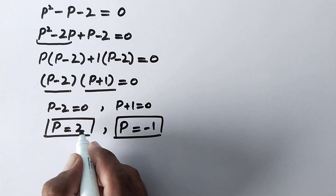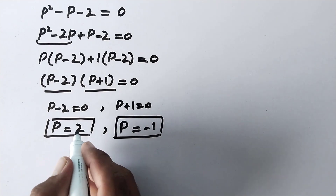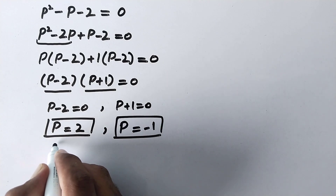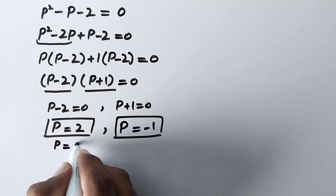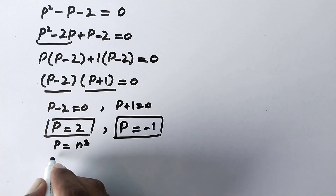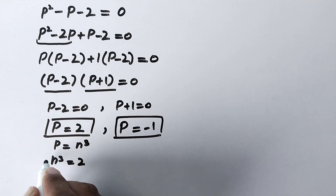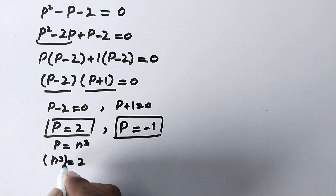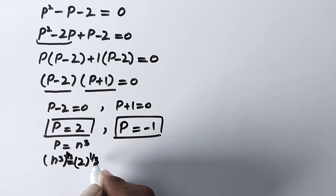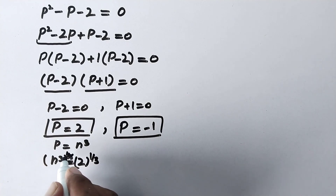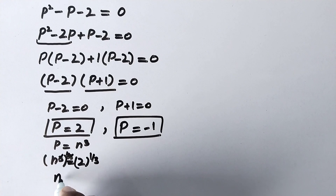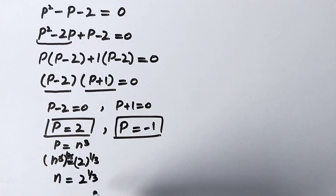Recalling that we assumed p equals n cubed: when p equals 2, we have n cubed equals 2. Taking the power of 1 over 3 on both sides, the cube cancels and n equals 2 to the power 1 over 3, which is the cube root of 2.